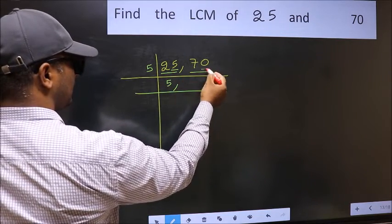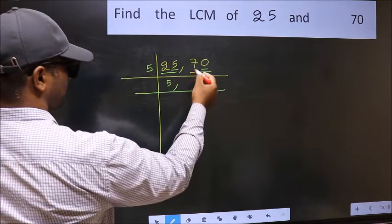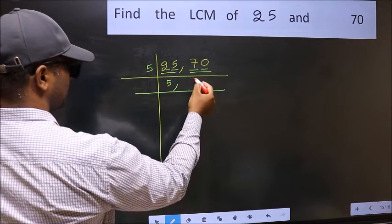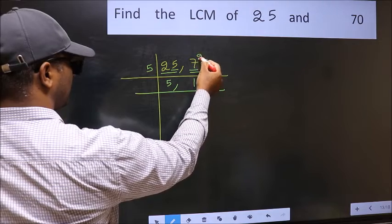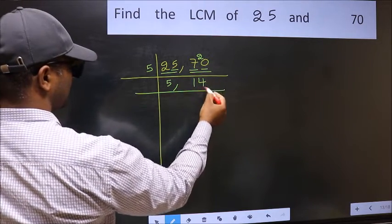The other number 70, last digit 0, so this is divisible by 5. First number 7. A number close to 7 in the 5 table is 5 times 1 is 5. 7 minus 5 is 2, carried forward 20. When do we get 20 in the 5 table? 5 times 4 is 20.